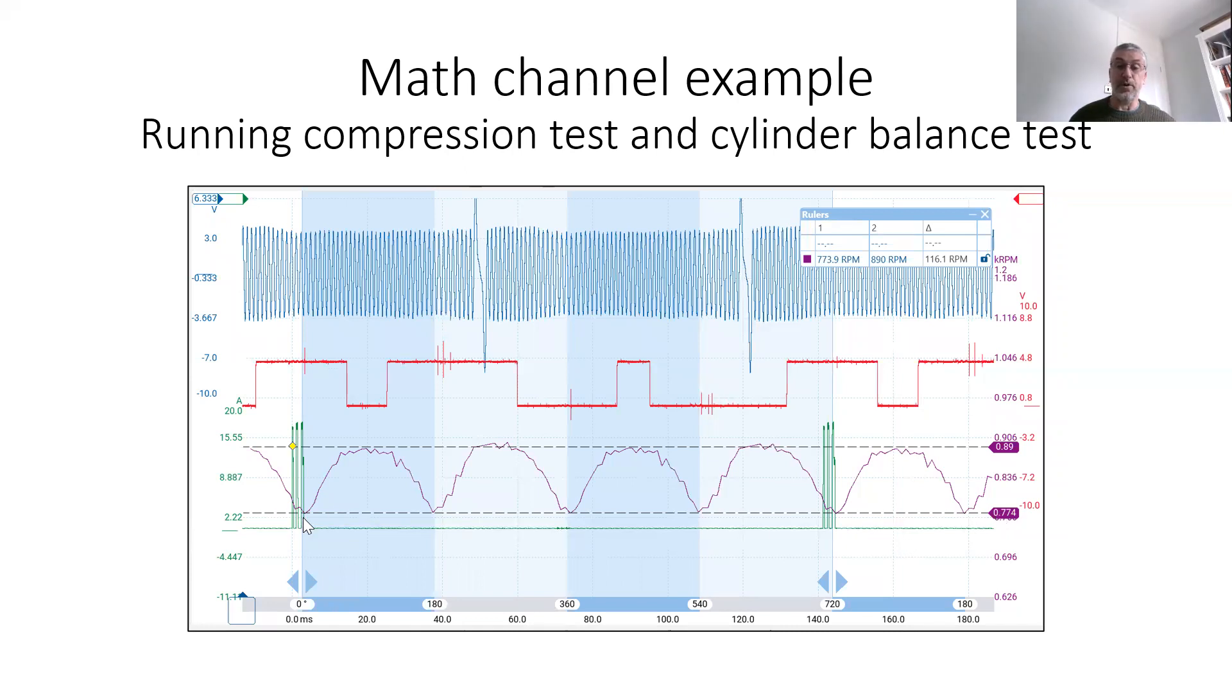As the engine comes up compression, the engine speed slows down. And you can see from this, we've got nice even slowest engine speed. So from this, you can calculate that the compression of all cylinders are equal.